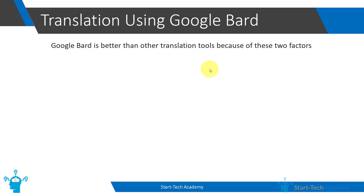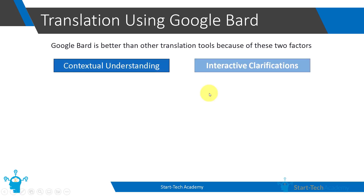Now we have other tools also like Google Translate. Google Translate has been one of the most popular tools for translating texts. But Google Bard is better than the currently available tools at translating texts, and there are two reasons for that.